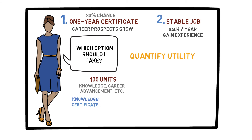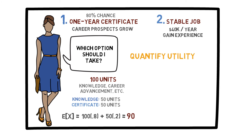Let's assume that you assign equal utility to both — that is, 50 units of utility to each. Now, if you pass the exam, your utility will be 100 units. If you don't pass the exam, your utility will essentially only be the knowledge you have gained by studying for the exam, which is 50. Then your expected utility can be computed using the same formula as before: 100 times the probability of passing the exam, which is 0.8, plus 50 times 0.2. This equals 90.